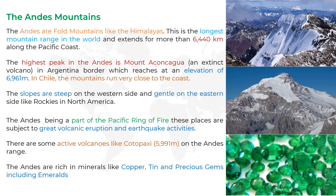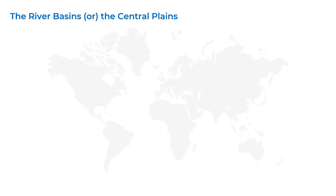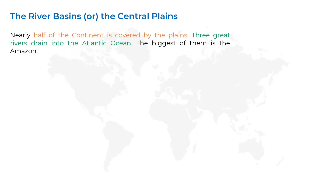The next topic is the river basins or the central plains. A river basin is the part of land through which a main river and all its tributaries flow. Nearly half of the continent is covered by plains. Three great rivers drain into the Atlantic Ocean, and the biggest of them is the Amazon.